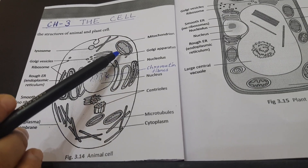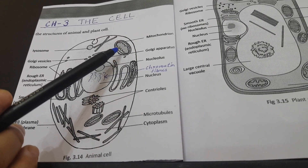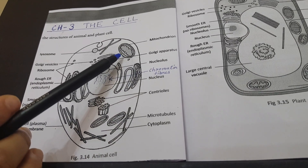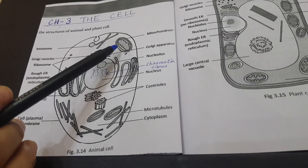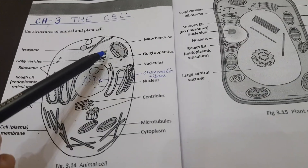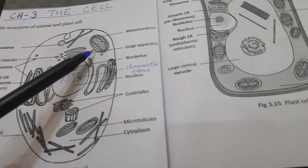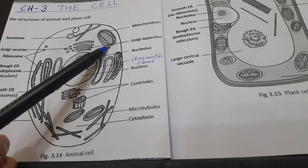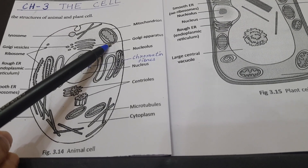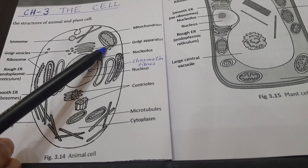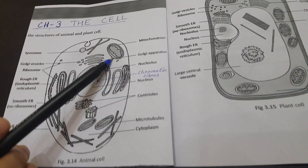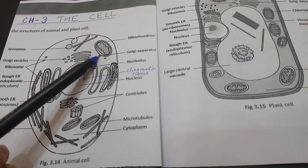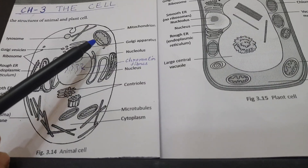Next we have mitochondria. Mitochondria are rod-shaped and spherical organelles. They are called the powerhouse of the cell because they give energy to the cell. The mitochondria use glucose and oxygen to produce energy.